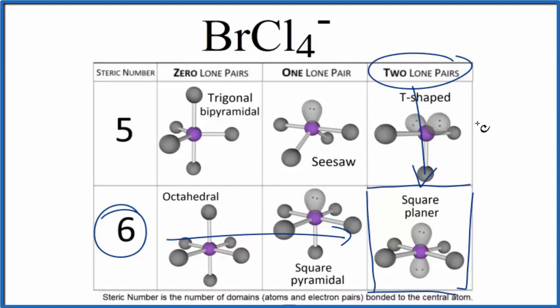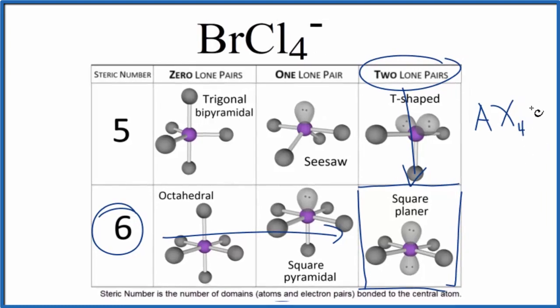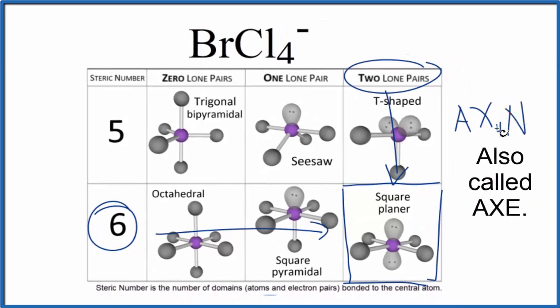If you use the AXN notation, A is the central atom, the bromine, X would be the chlorines. We have four, and then N, that was the number of lone pairs. We had two, and if you look this up, you would find that that's square planar.